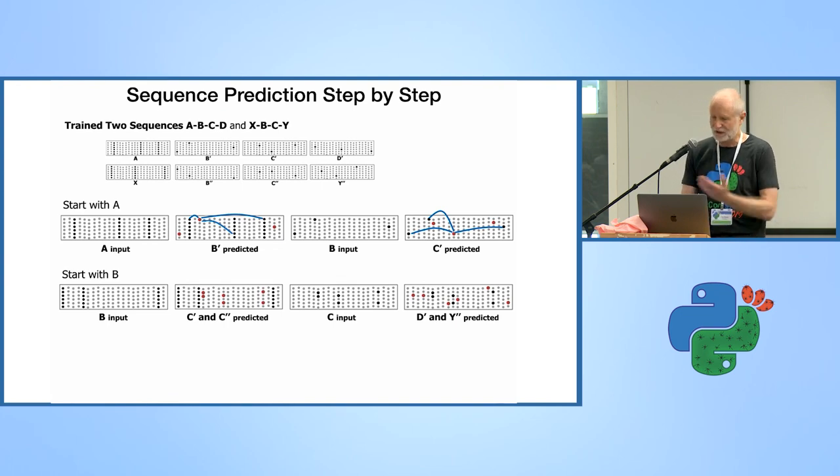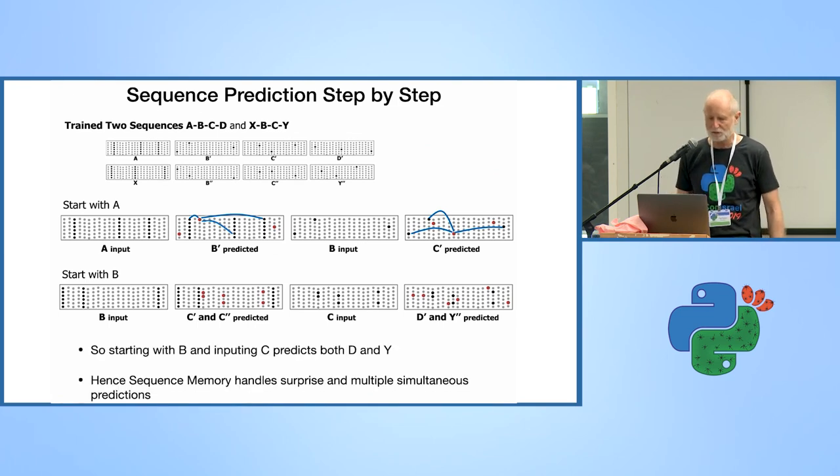HTM not only can learn sequences, it can also make multi-predictions. Maybe one of the sequences, later on one of the inputs will be able to distinguish between which of the sequences is the relevant sequence. If the next input is a Y, then only the Y will be active and the potential D will disappear. Starting with B and inputting C, we get dual prediction. So I can make multiple predictions. As you can see, it can handle surprises and it can handle new information very elegantly.